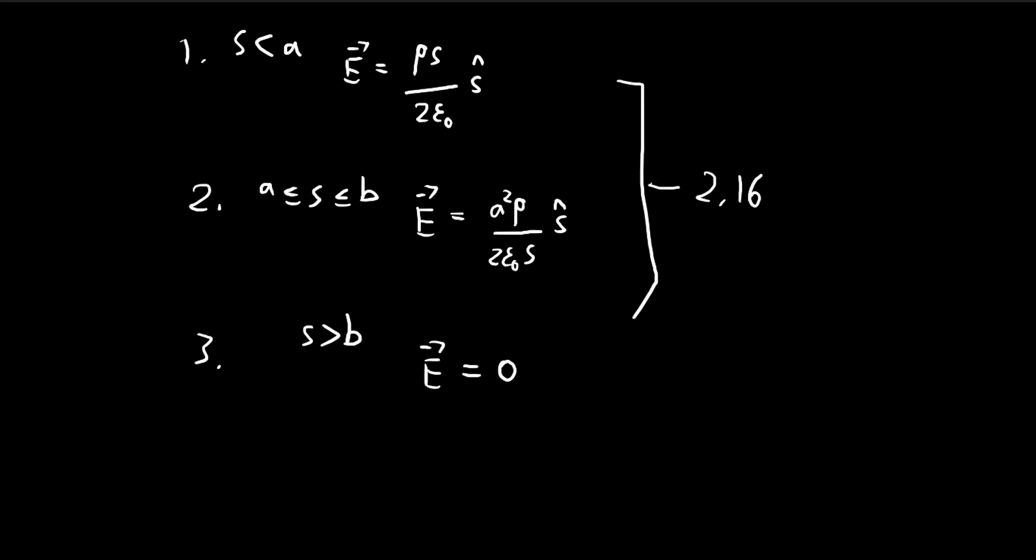Starting from this, how do we find the potential? The potential we want to find is from a point on the outer cylinder to a point on the axis. Using the definition of potential difference, we can write out this integral.